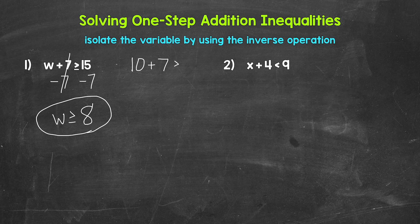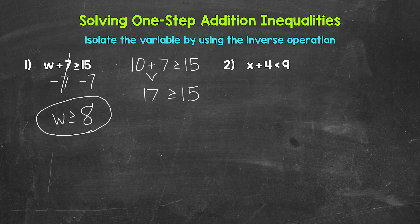10 is greater than or equal to eight, so let's plug in 10 for w. We have 10 plus seven is greater than or equal to 15. 10 plus seven gives us 17. 17 is greater than or equal to 15. So 10 does make this inequality true, along with any other number greater than or equal to eight. Our answer for number one: w is greater than or equal to eight.